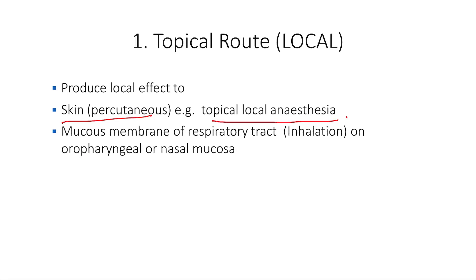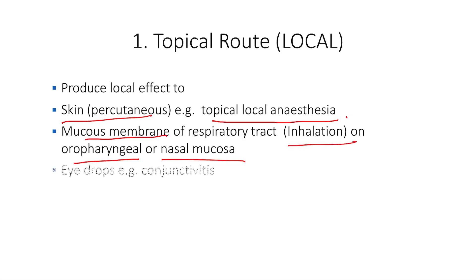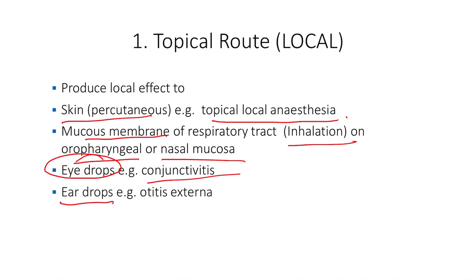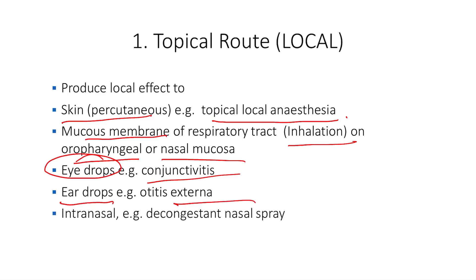Topical or local effects can also be produced on mucous membranes, for example the mucous membrane of the oropharynx or nasal mucosa. We can produce local effects through the inhalational route. We can get topical effects by instilling eye drops — for example, in conjunctivitis. Same way, ear drops: in ear infections, we instill ear drops which go directly at the site. For intranasal use, in a stuffy nose, nasal sprays act directly onto the nasal mucosa and decrease the congestion.